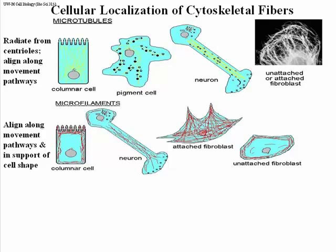Here's our neuron again. The shape of the cell, especially the structure of the axon, is in part due to the alignment of actin filaments along the long axis. But this doesn't seem to be involved too much in the mobility of vesicles — that's a function of the microtubules.